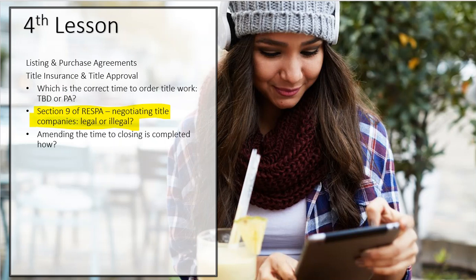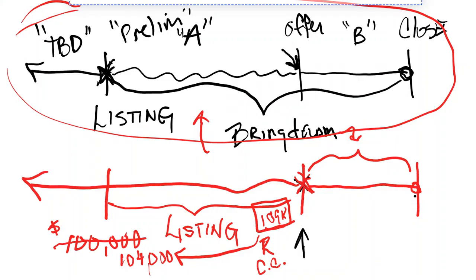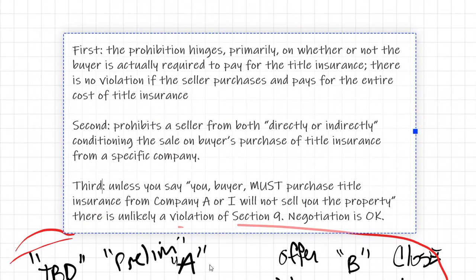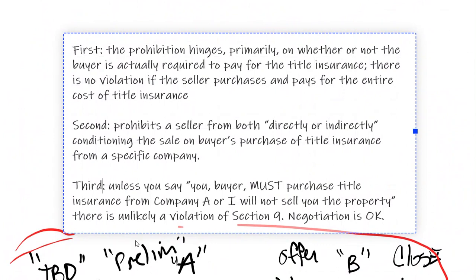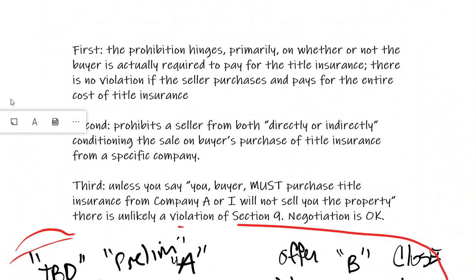I am here to tell you that is entirely false. That's not what Section 9 of RESPA says. Section 9 of RESPA says that a seller cannot force the buyer to purchase directly or indirectly any settlement service picked by the seller. So there's a couple of things in here I want to talk about. The first one is this.